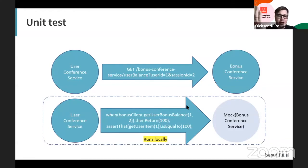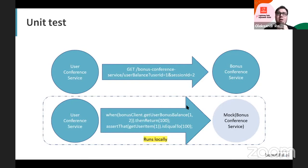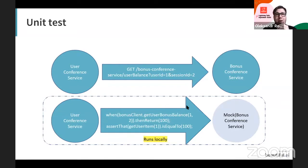So when the bonus client makes a call to the get user bonus balance method, we define what value to return and then assert that value is as expected. The main idea here is that unit tests are really simple to implement and really fast — they execute locally on the developer's machine, so we can have a thousand unit tests running in a matter of minutes.